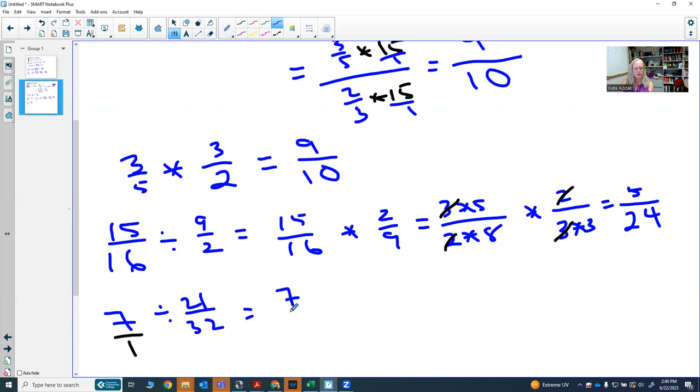Then I could write this as seven over one over top of 21 over 32, or I could just multiply by the reciprocal of the 21 over 32 to get 32 over 21.